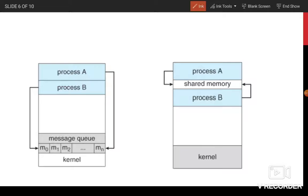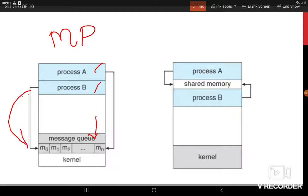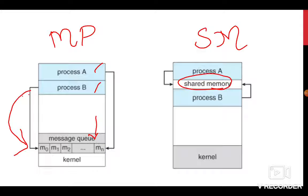The first figure shows the message passing model, where processes communicate with each other through the message queue. A process sends a message, and the message is stored in the queue until the receiver retrieves it. The second model is the shared memory model, where processes communicate through shared memory using either shared data variables or shared control variables.